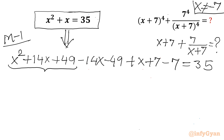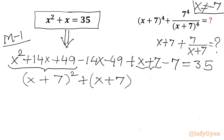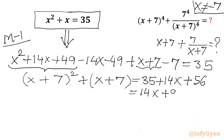From the first three terms I can write (x+7)². Now x+7 remains. The rest of the terms I will take to the RHS: 35 + 14x + 49 + 7, which gives 14x + 91. Now I will add 7 and subtract 7.